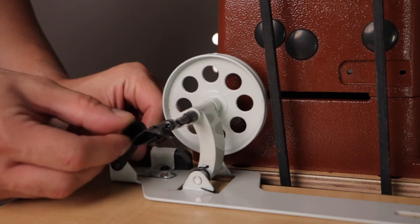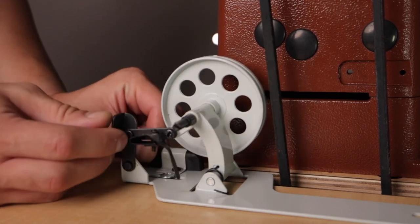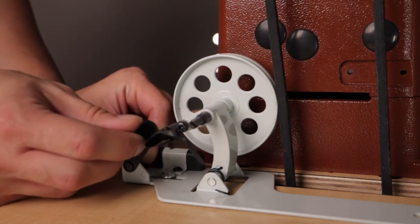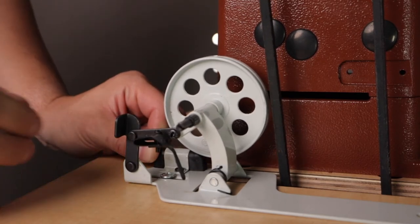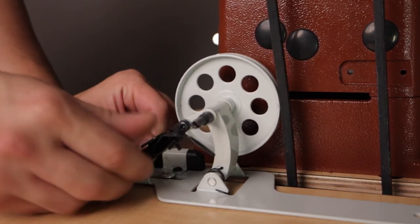For the bobbin winder, you want to make sure that when the winder is engaged, the wheel is putting light pressure on the rubber belt. When the lever is down, the wheel is not engaged to the belt.